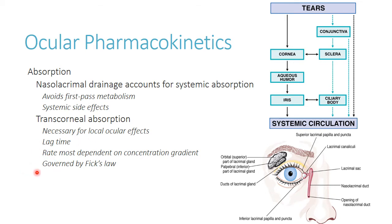Most of this is going to be dictated by that concentration gradient, per Fick's law. The thickness of the membrane is a factor — the cornea is relatively thin compared to skin, so you have decent absorption. Surface area is relatively fixed since the eye is just as big as it's going to get. Concentration is something we can change by adjusting the drug product. Lipophilicity of the drug also matters — the more lipophilic it is, the better absorption you have.